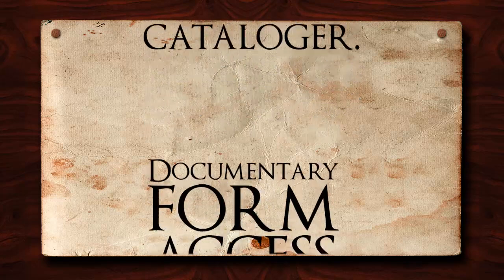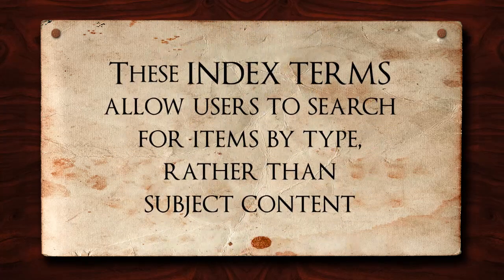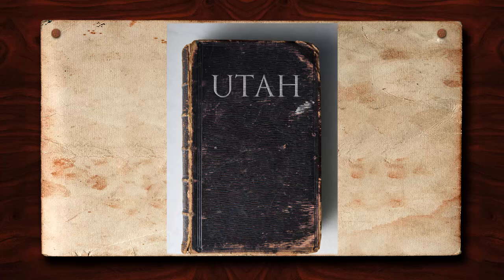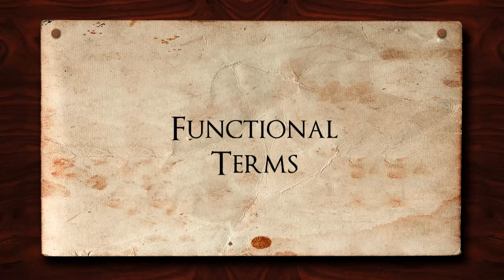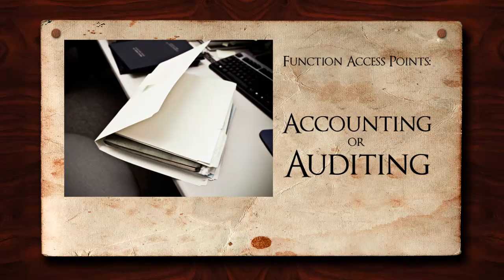In addition to subject terms, there are other access points that should be recorded. The first of these are documentary form access points or genre form terms. These index terms allow users to search for items by type rather than subject content and describe what an item is, not what it is about. For example, while the subject of this item might be Utah, its documentary form is books. Another type of access point is functional terms, which are meant to document the functions that generated a body of material. For example, a collection of business financial records might have function access points for accounting or auditing depending on the purpose of their creation.